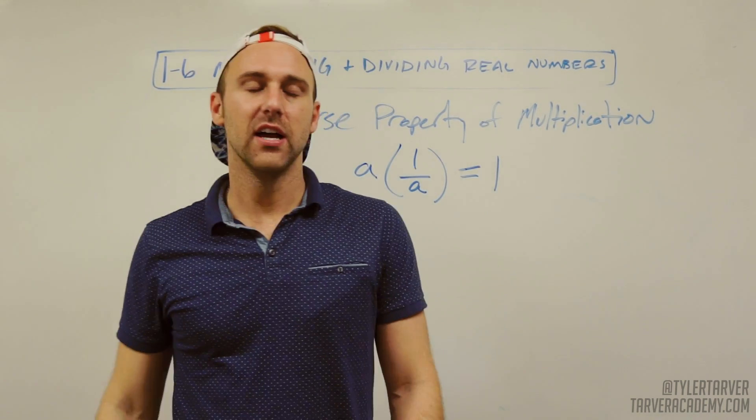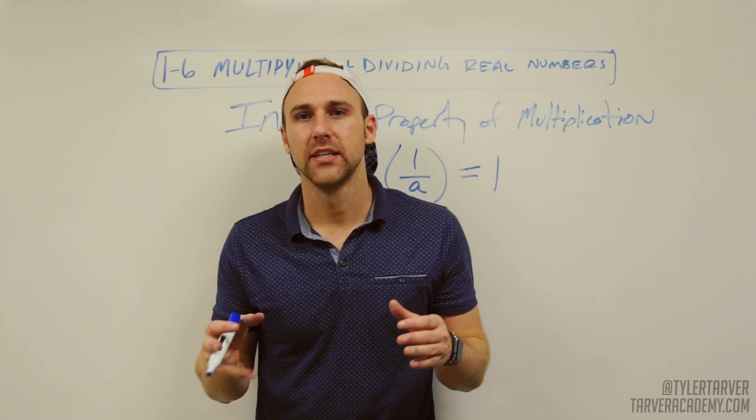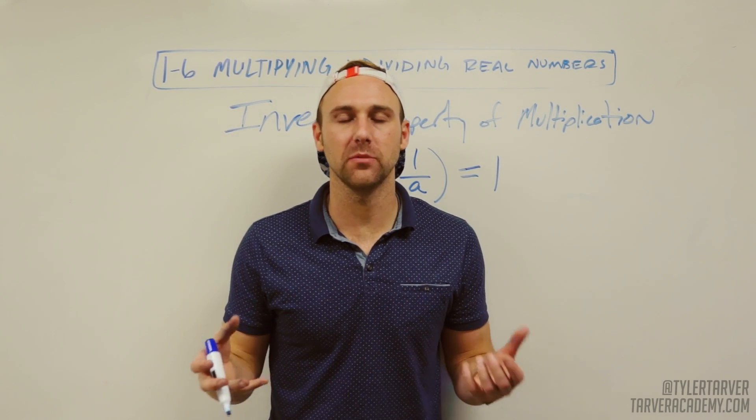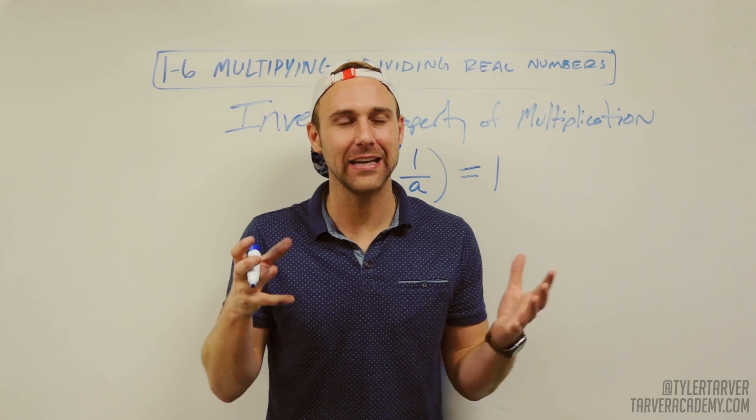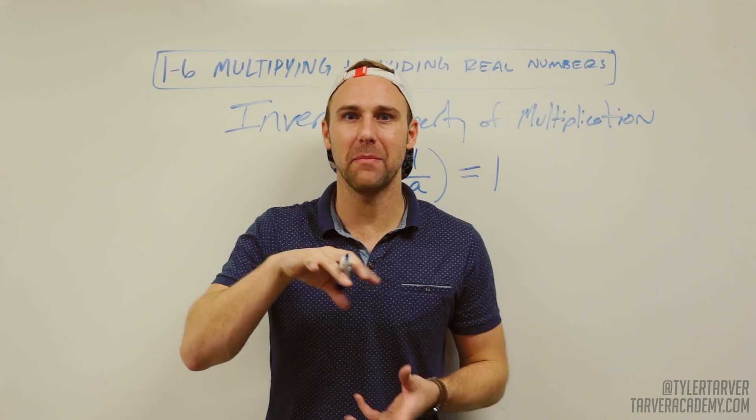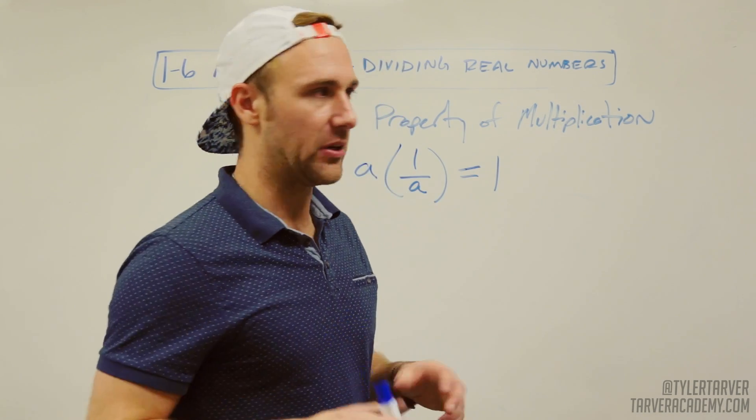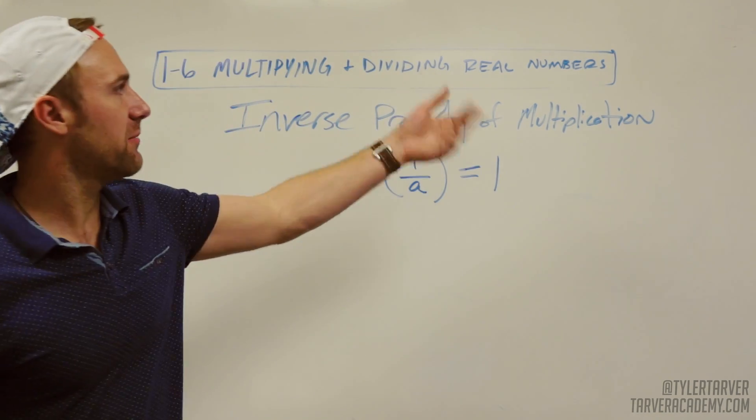Inverse property of multiplication. It's almost like division doesn't exist. It's like the opposite of multiplication. Multiplication is like the king, and then division is like the man in the iron mask. That's a reference no one would get. It's a good book. Inverse property of multiplication.